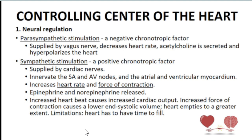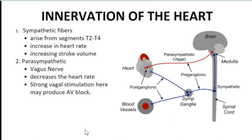To clarify: sympathetic fibers arise from T2 to T4 of the spinal cord, and their job is to increase heart rate and stroke volume. They send cardiac nerves that release epinephrine and norepinephrine, increasing permeability to sodium and calcium. Parasympathetic fibers send a signal via the vagus nerve, releasing acetylcholine, which increases potassium permeability and hyperpolarizes the cardiac muscles, thereby decreasing heart rate.